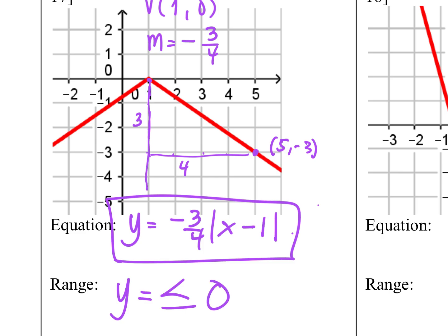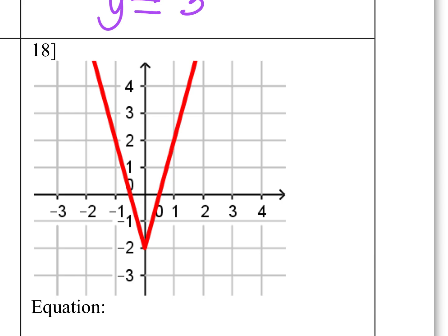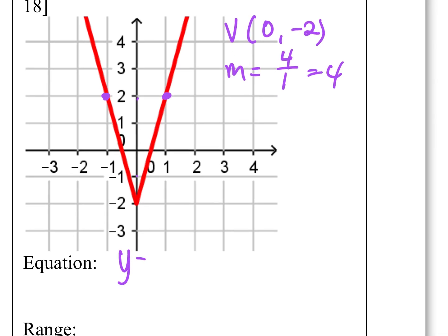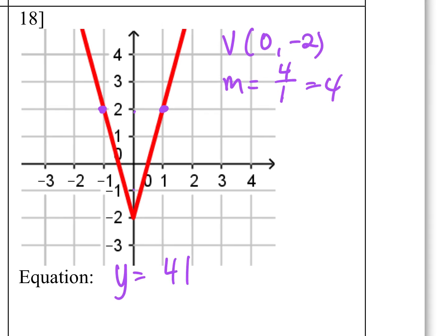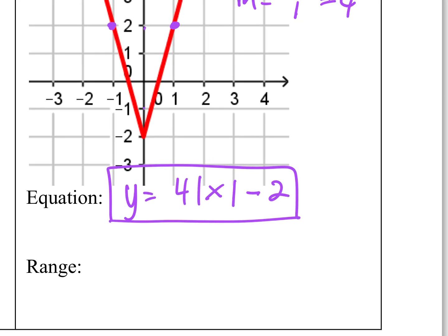Number 18: The vertex is at 0 and negative 2. Going up 4 and right 1 gives a slope of 4. The equation is Y equals 4 times absolute value of X minus 0, minus 2, which simplifies to Y equals 4 times absolute value of X, minus 2. The lowest value is negative 2, so the range is Y greater than or equal to negative 2.